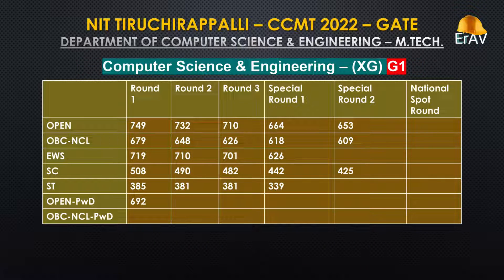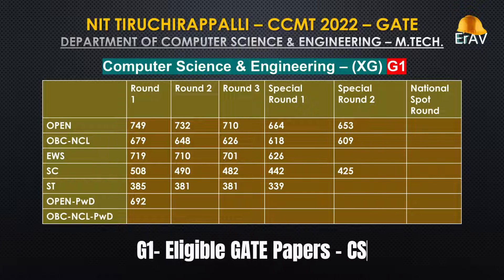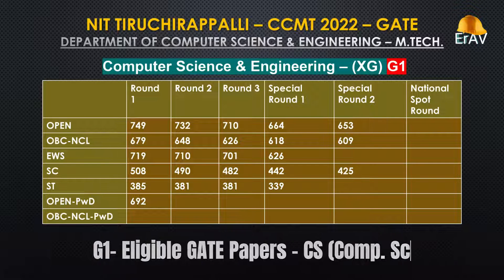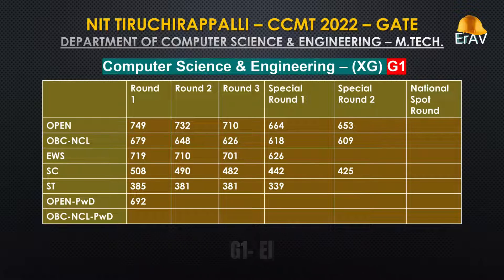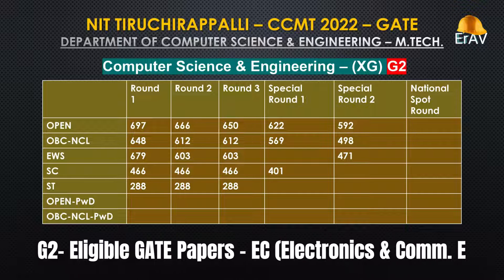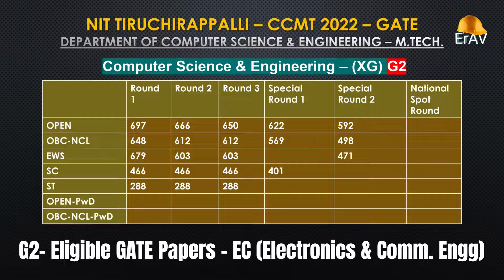Computer Science and Engineering department. Group 1 — Eligible GATE Papers: Computer Science and Information Technology (CS). Group 2 — Eligible GATE Papers: Electronics and Communication Engineering (EC).